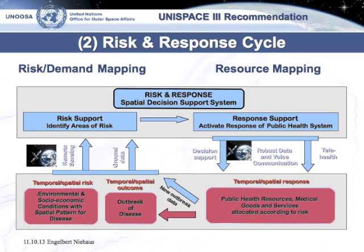Basically, we are looking at a risk and response cycle. On the left-hand side, we identify the risk. On the right-hand side, we allocate the resources — mainly limited resources — according to this risk. By an integrated approach, we optimize the use of available resources according to public health risks.